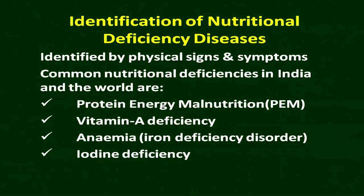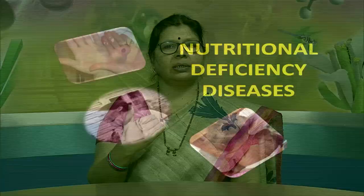Now we will go to the third method of assessing nutritional status — identification of nutritional deficiency diseases — by physical signs and symptoms. The common ones are protein energy malnutrition, vitamin A deficiency, anemia due to iron deficiency, and iodine deficiency disorder. These four are common not only in our country but all over the world.